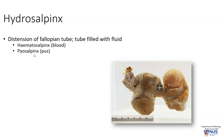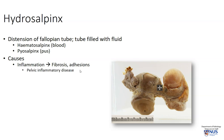Pyosalpinx can occur in the context of pelvic inflammatory disease. The causes of hydrosalpinx are several — it could be due to the presence of inflammation, and sometimes there is healing and scarring and fibrosis with adhesions which may occur at the fimbrial end and hence cause a blockage in the tube lumen. This is often secondary to pelvic inflammatory disease from sexually transmitted infections, and also infections and inflammation in the vicinity of the fallopian tube, for example in the case of ruptured acute appendicitis.